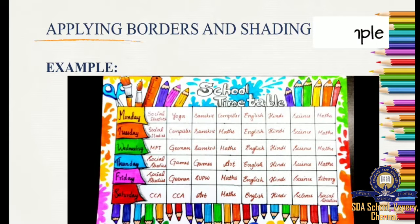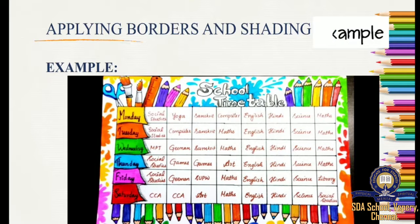In the last class, we learnt merging cells and splitting cells, changing the column width and changing the row height. We saw how to change the height of a row and how to change the width of the column, and how to merge a cell and how to split a cell.